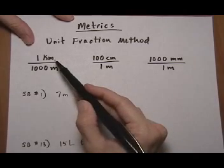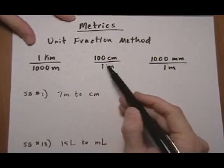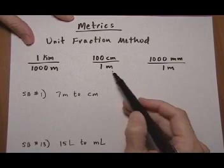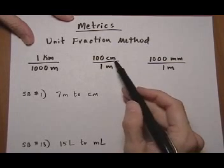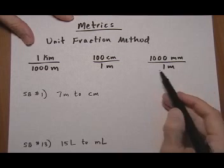One kilometer is exactly the same as a thousand meters, so this fraction equals one. A hundred centimeters is the same as one meter, so that fraction equals one. A thousand millimeters equals one meter, so this fraction equals one.